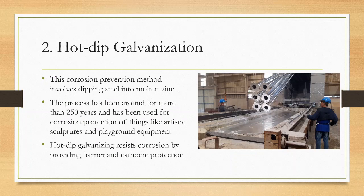Hot-dip galvanization: This corrosion prevention method involves dipping steel into molten zinc. The iron in the steel reacts with the zinc to create a tightly bonded alloy coating which serves as protection. The process has been around for more than 250 years and has been used for corrosion protection of things like artistic sculptures and playground equipment. Compared to other corrosion prevention methods, galvanization is known for lower initial cost, sustainability, and versatility.